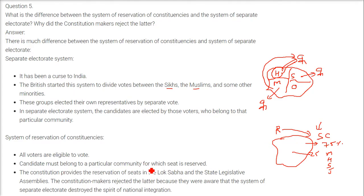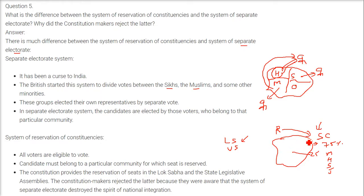The constitution provides reservation of seats in the Lok Sabha and State Legislative Assemblies according to the SC and ST population. The constitution makers rejected the separate electorate system because it destroyed the spirit of national integration. In reserved constituencies, only SC candidates can stand, but they are voted by anyone — any caste, creed. SC, Muslim, Hindu, and Sikh voters can all vote for them.